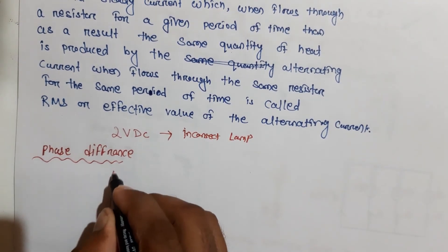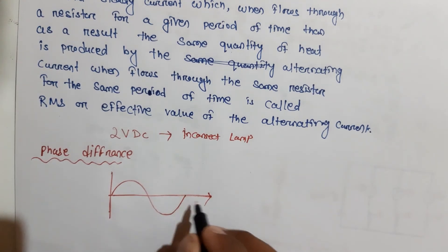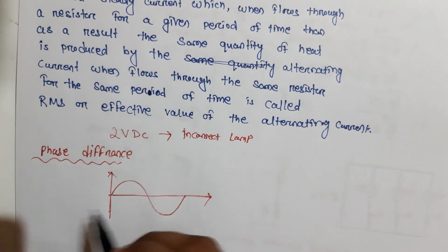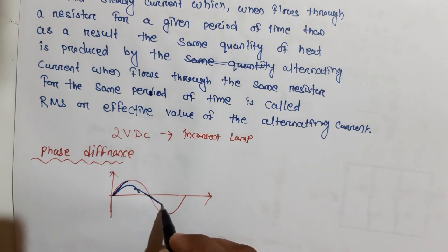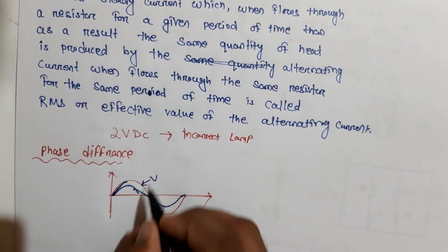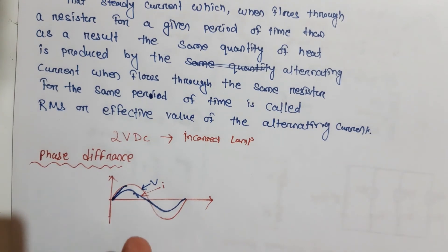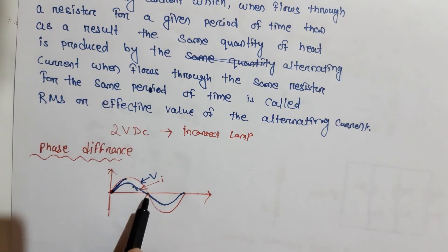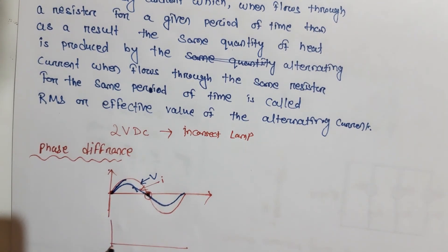Next we discuss phase difference. Consider a voltage waveform and a current waveform over the same time period. If the voltage and current both start from the origin and are at zero at the same point, they are in the same phase — there is no phase difference between them.